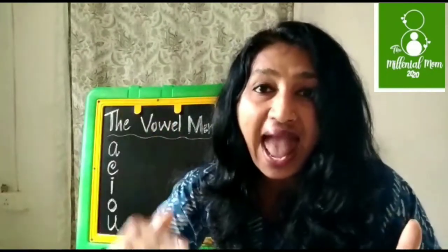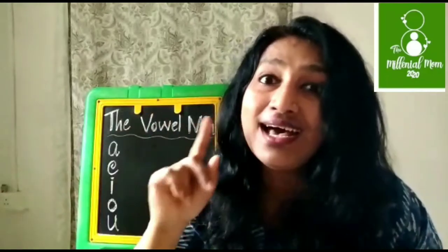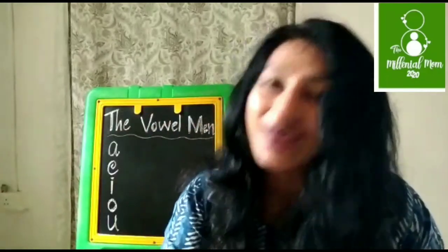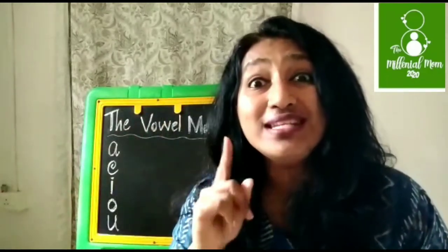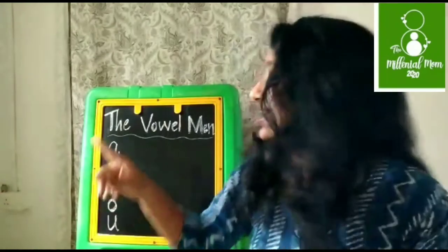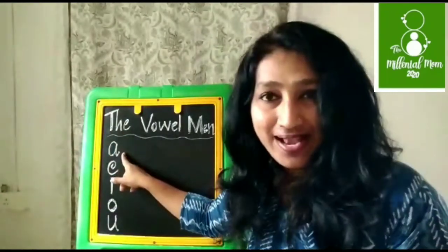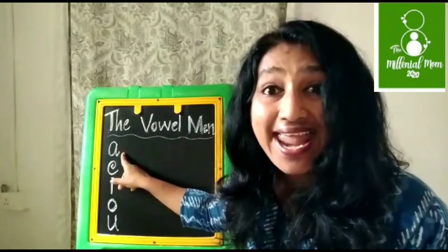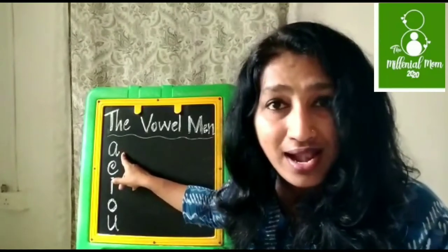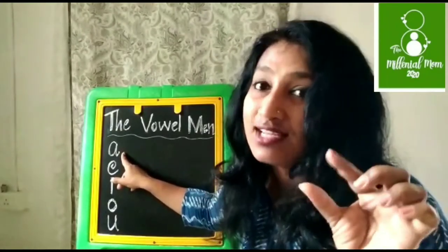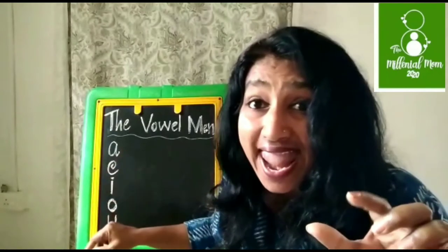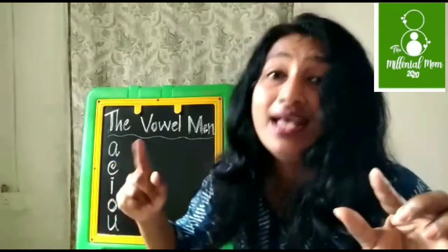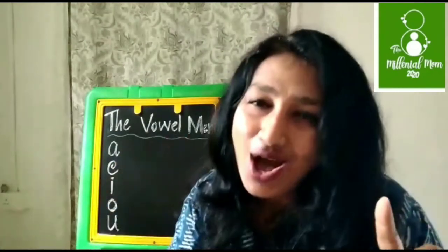A is the long vowel sound, and in apple, the A is the short sound. So what are the different sounds of A? Apple — short sound. Apron — that A is the long sound. So A is the short sound and A for apron is the long sound.